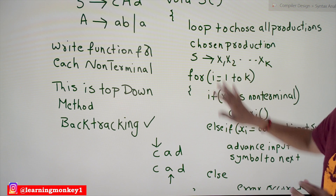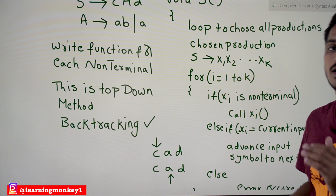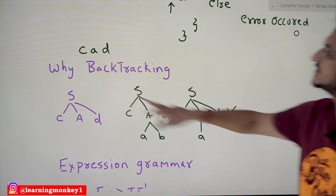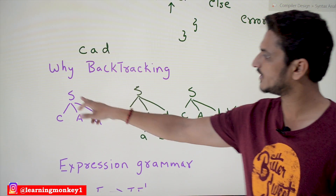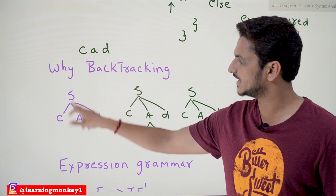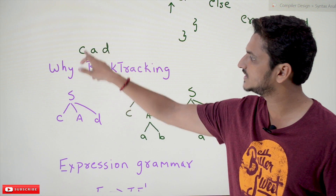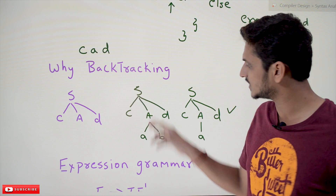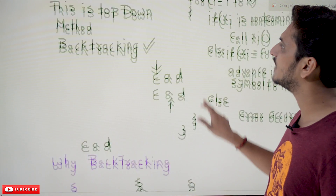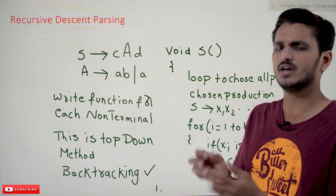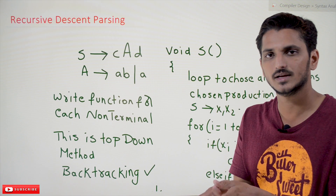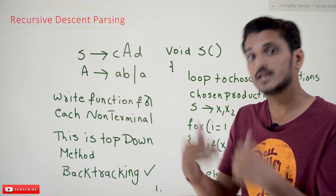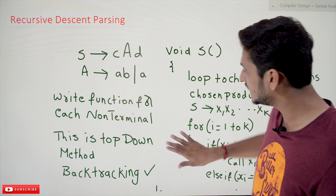To understand backtracking, consider the input string 'cad'. The first function called is S. S tends to c A d — the first input symbol c matches c. Now we expand A by calling its function. A has two productions: we take the first production, apply it; if it fails, take the second — that going-back-and-retrying is backtracking.